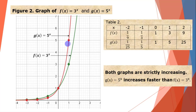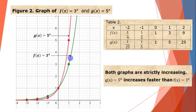The red-colored graph is g(x) = 5 raised to x. At x = −2, g(x) = 1/25. At x = −1, g(−1) = 1/5. g(0) = 1. g(1) = 5. g(2) = 25. The green-colored graph is f(x) = 3 raised to x: f(−2) = 1/9, f(−1) = 1/3, f(0) = 1, f(1) = 3, f(2) = 9.